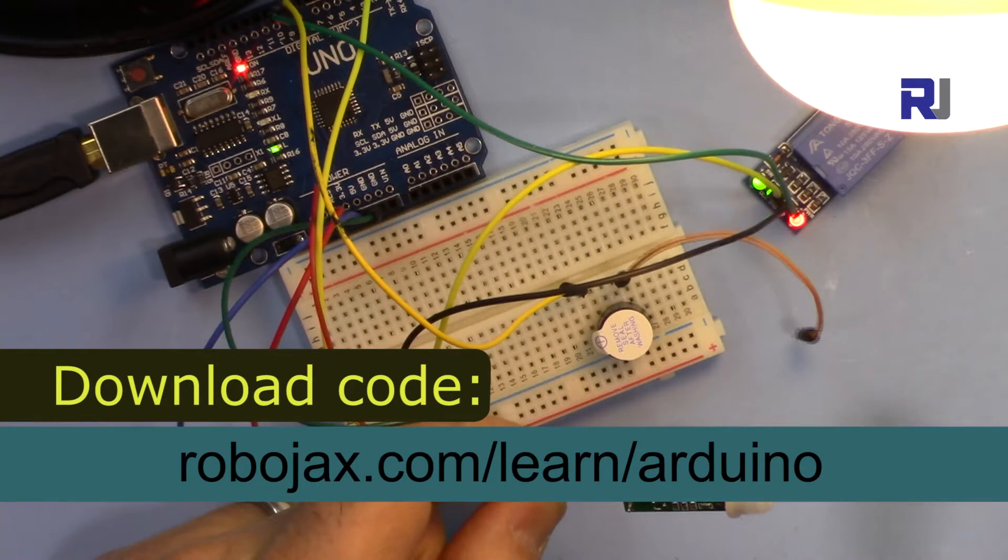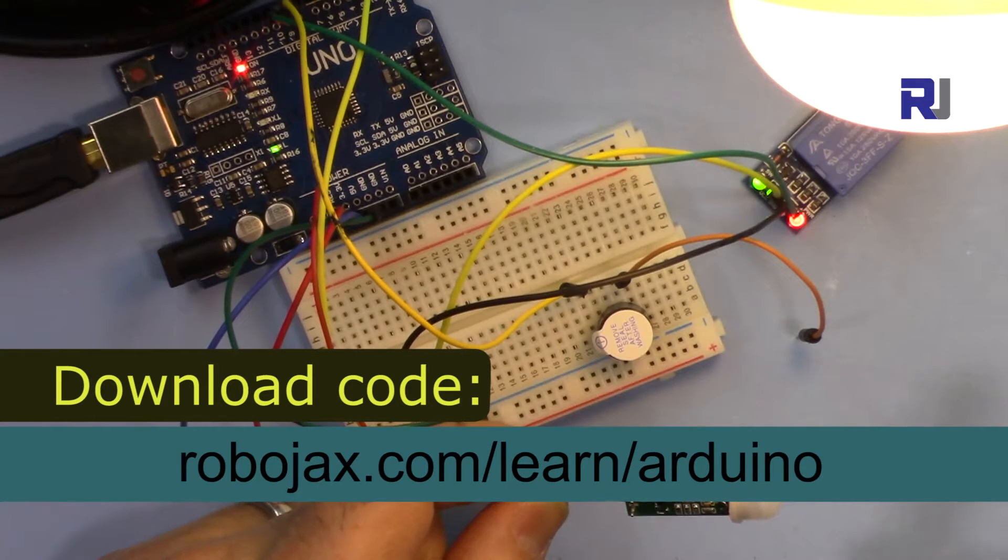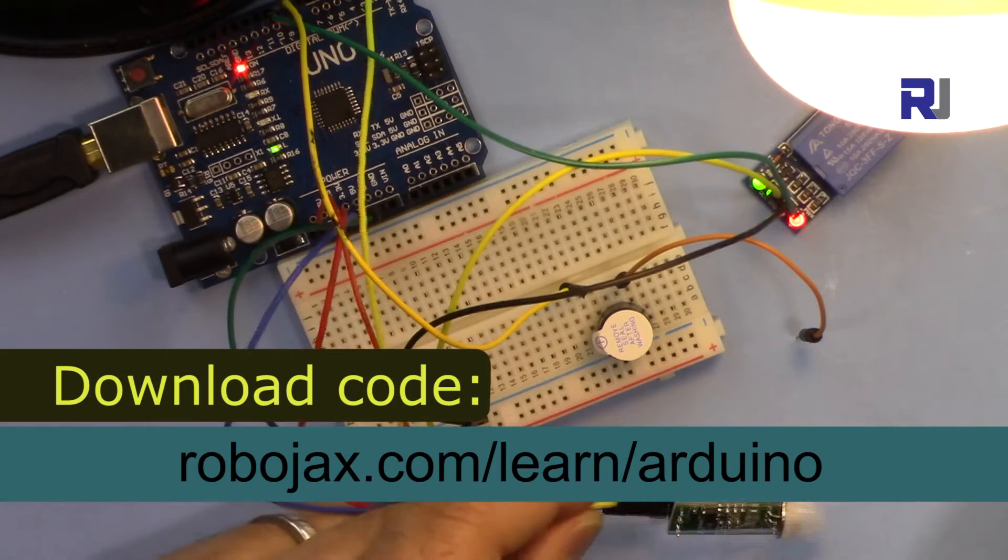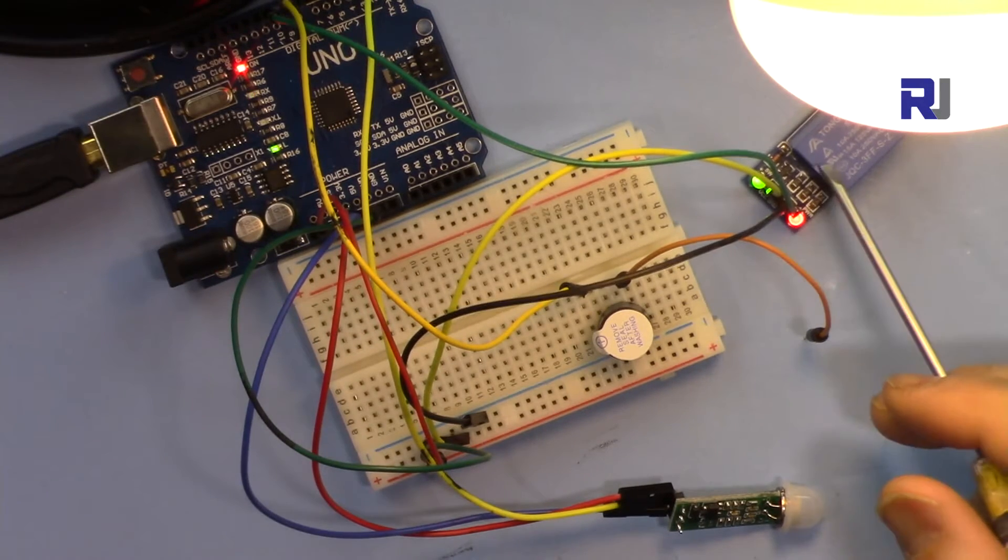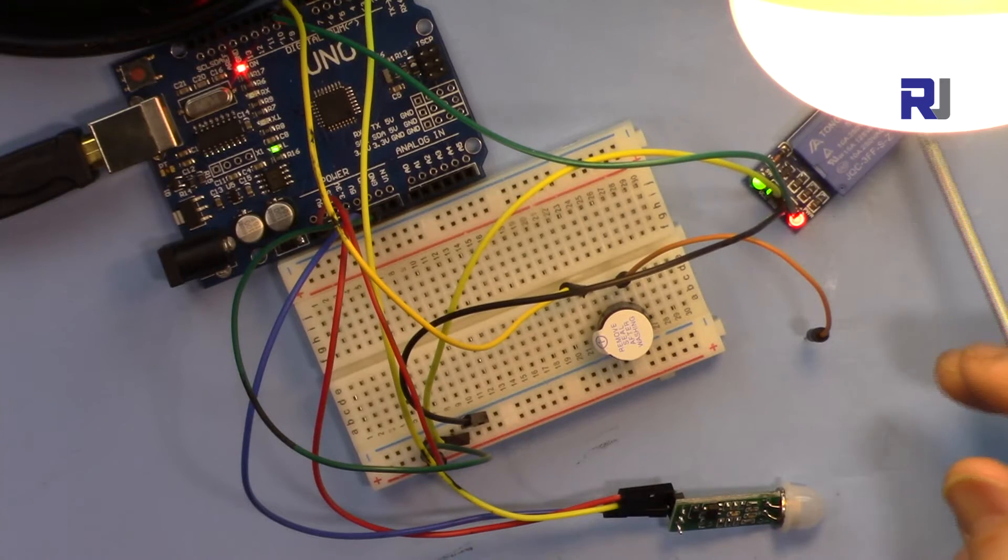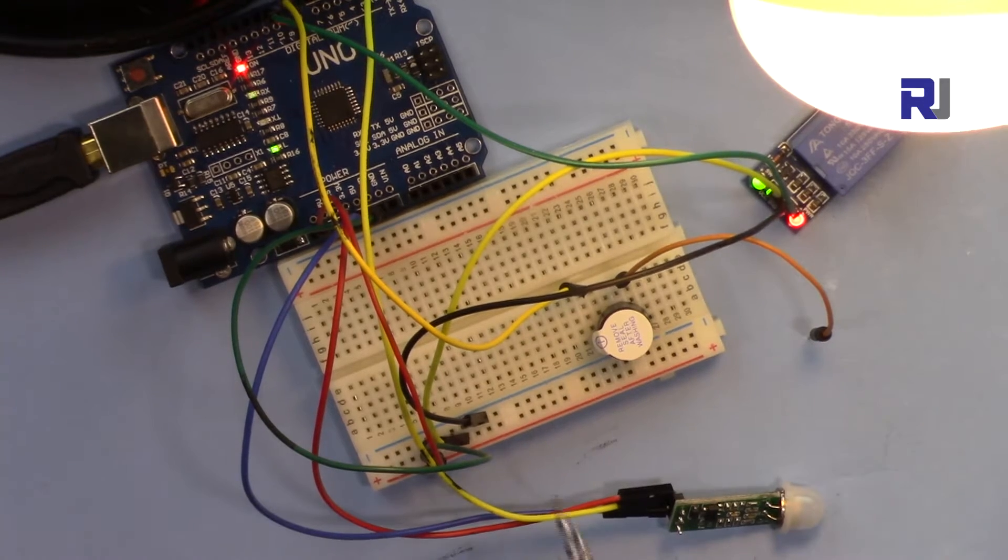You can get the code for this project by clicking the link in the description which will take you to robojax.com/learn/Arduino. A matter of warning - I've connected this relay now to AC 120 volts, so it's very important that once this is connected to the voltage you do not touch this and you do not work with this.